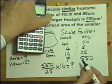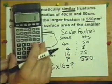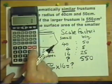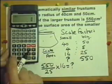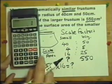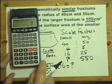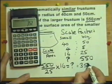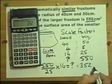So we'll use the calculator. 550 divided by 25, multiplied by 16. The button got stuck — just what you need in the middle of an exam! The surface area of the smaller frustrum is 352.